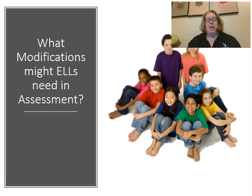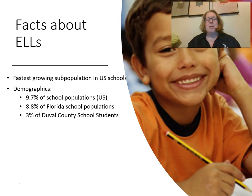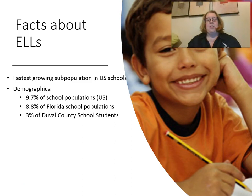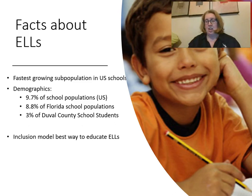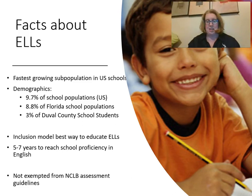A lot of these modifications will be the same that we talked about last week with students with special needs. It's the fastest growing sub-population in US schools — about 9.7% nationally, about 8.8% of Florida school populations, and about 3% of Duval County schools. The majority of the English language learner population in Florida is farther south. The supportive inclusion model is the best way to educate ELLs, with immersion in the language with facilitative support. It takes between five to seven years to reach full school literacy in English, but they're not exempt from the NCLB guidelines.